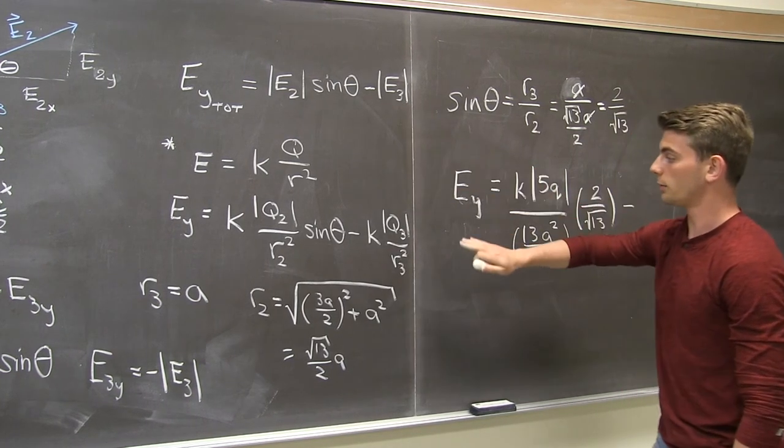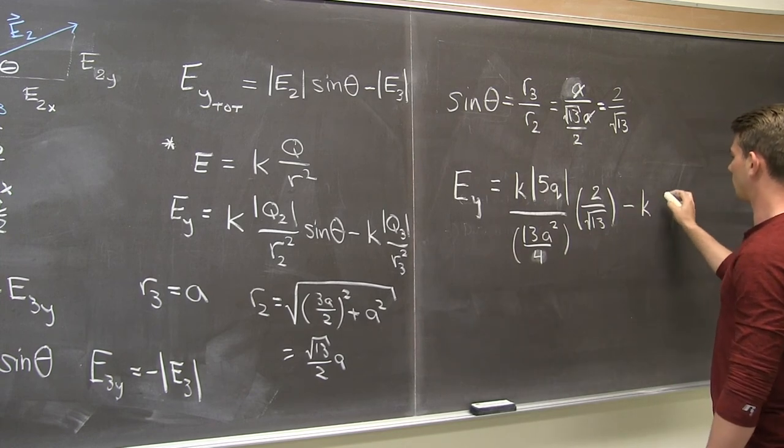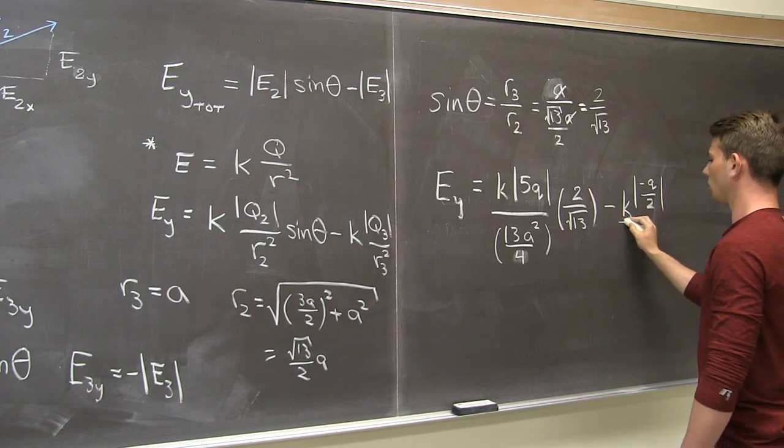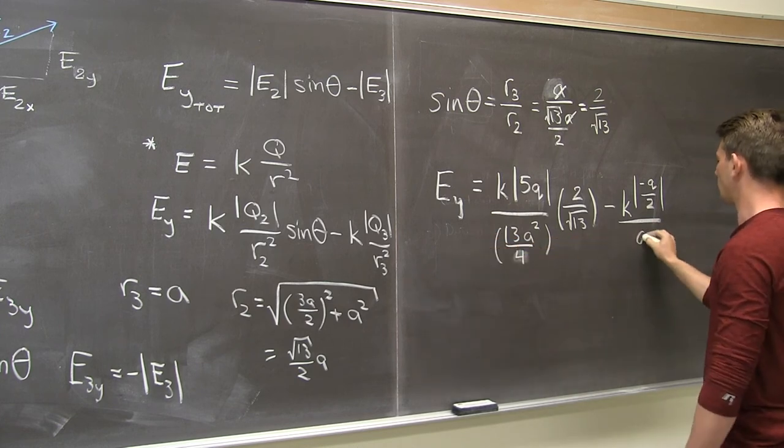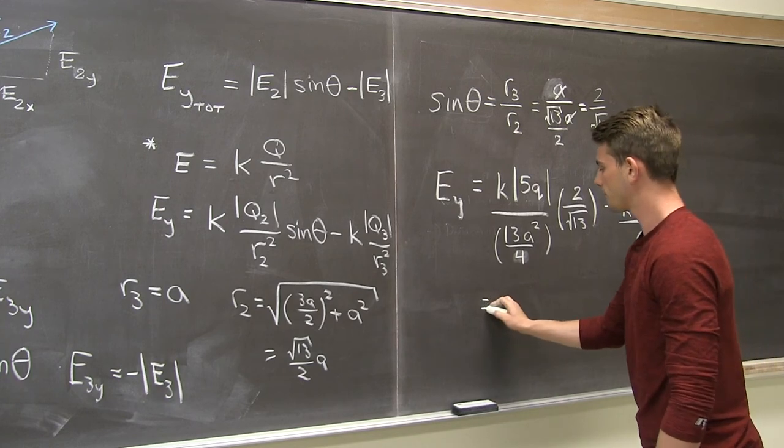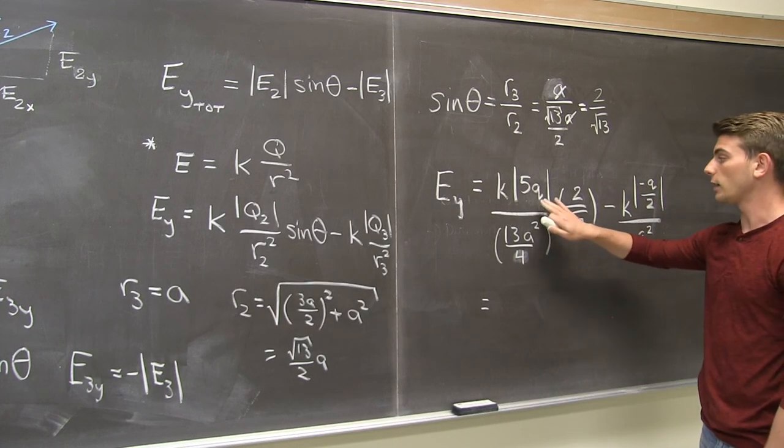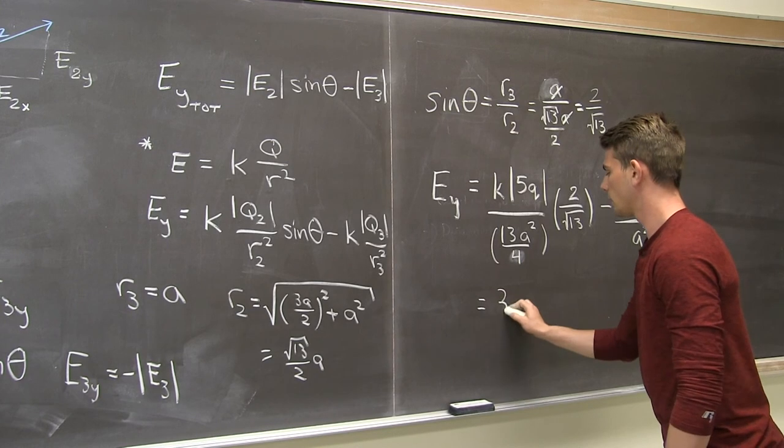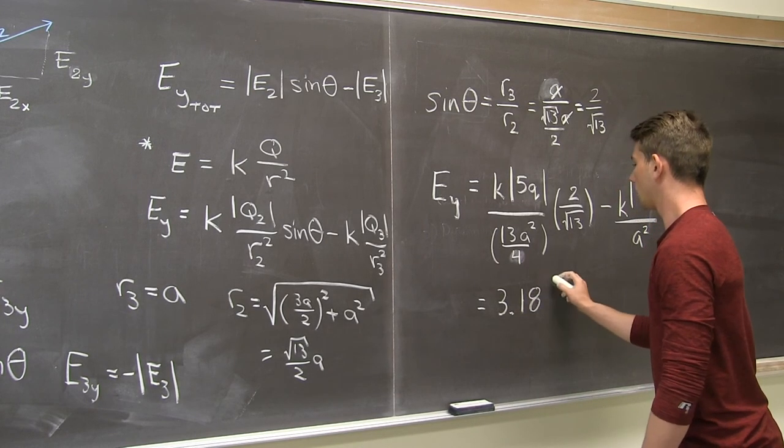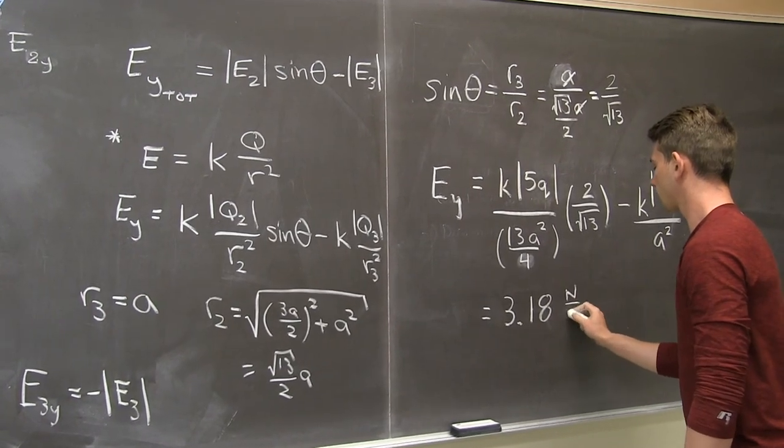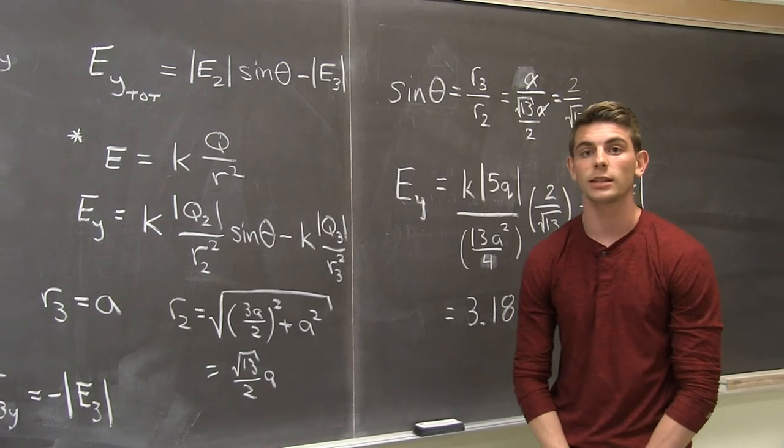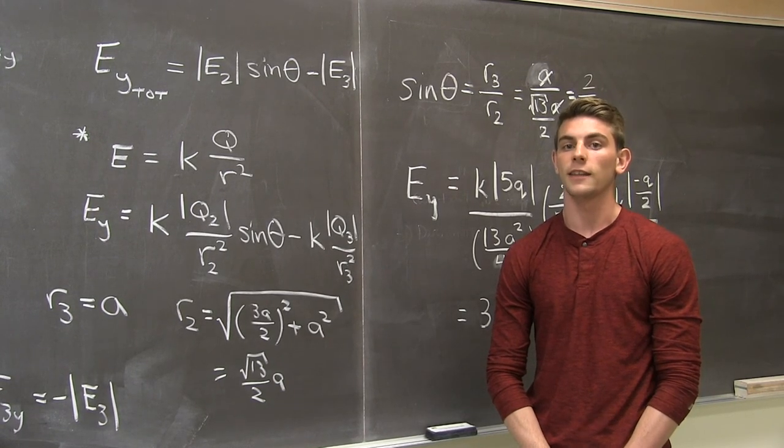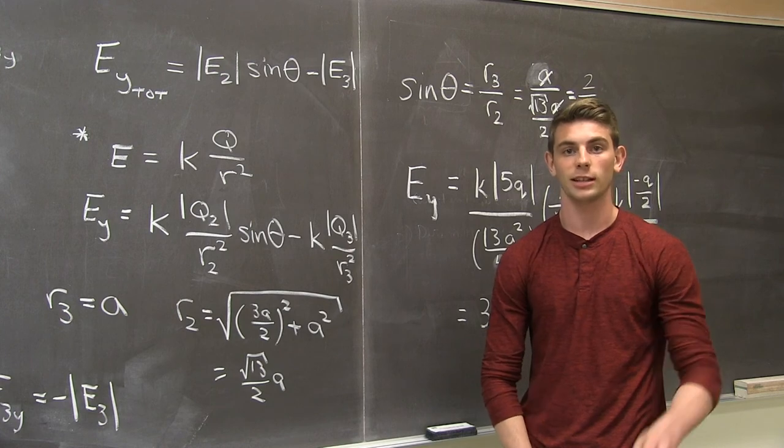Minus the magnitude of e3 which is k times q3 which is negative q over 2, all over r3 squared which is just a squared. Now with a being 1 meter and q being 1 nanocoulomb and k being Coulomb's constant which is given, this should evaluate to 3.18 Newtons per Coulomb. Now for a bonus I encourage you to find the x component of the electric field as well as the overall electric field and direction. The answers will be given in the description below. Thanks again for watching, thanks Dave, and good luck.